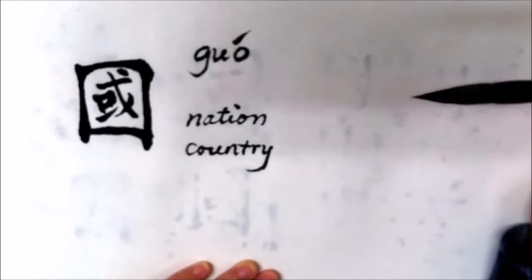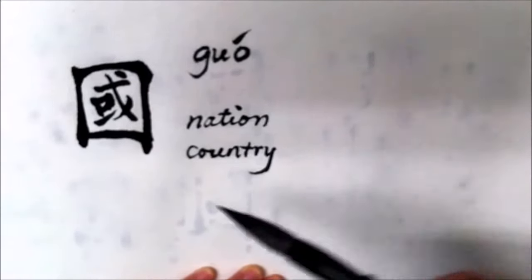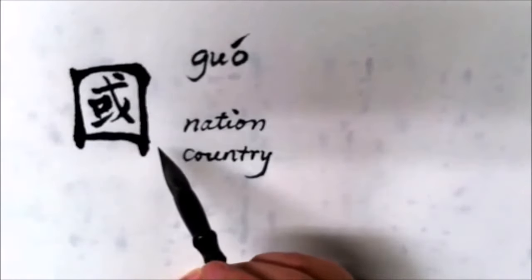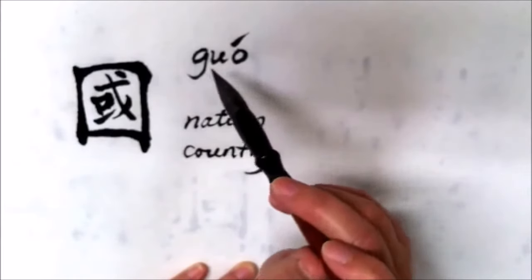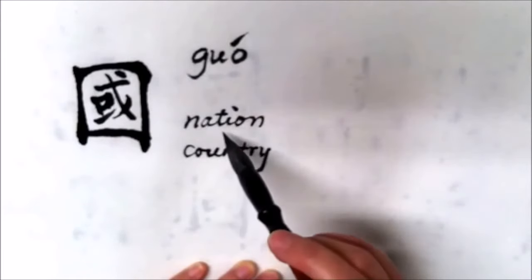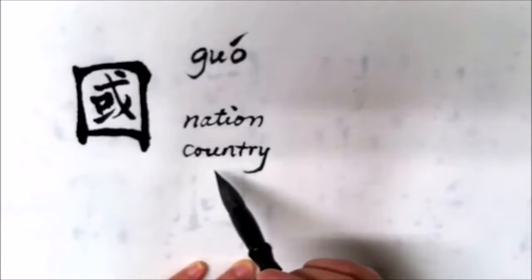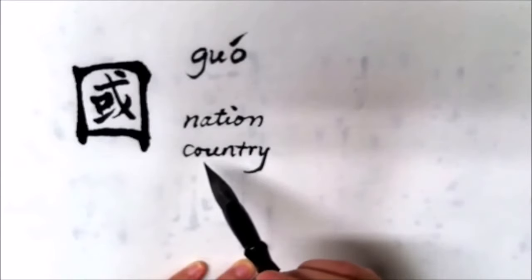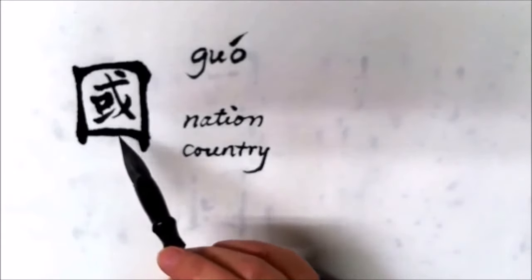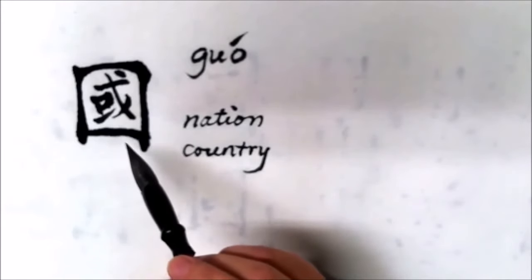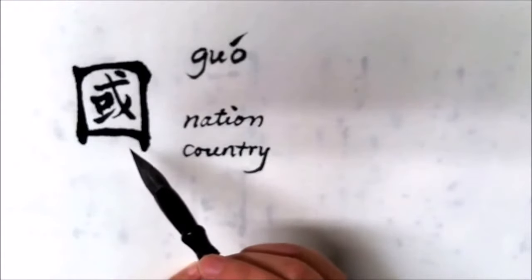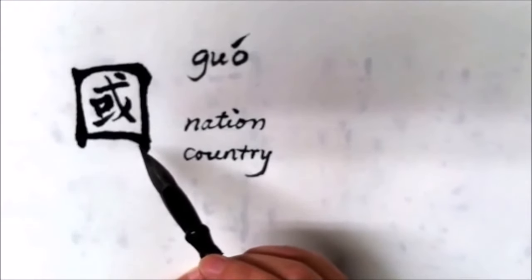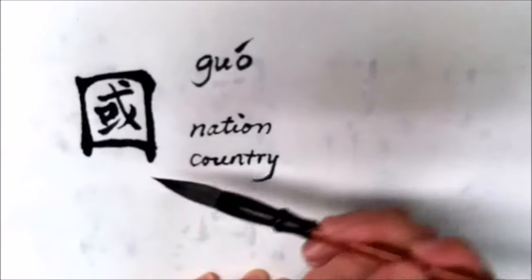Hello everyone! In this video, we are going to get to know this character. It sounds 国 (guó) and means nation, country. What you are seeing is the traditional writing. In my previous video, we already knew the simplified writing of this character.